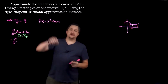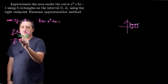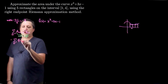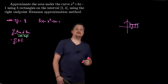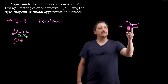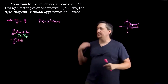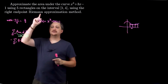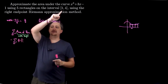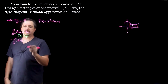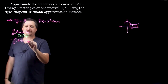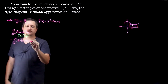My width is 3 fifths for each rectangle. My height is going to be f of something, where my little cartoon tells me I want to start one width over. So it's going to be wherever my starting value is — which is 1 — plus however many widths over I've gone, where my width is 3 fifths.